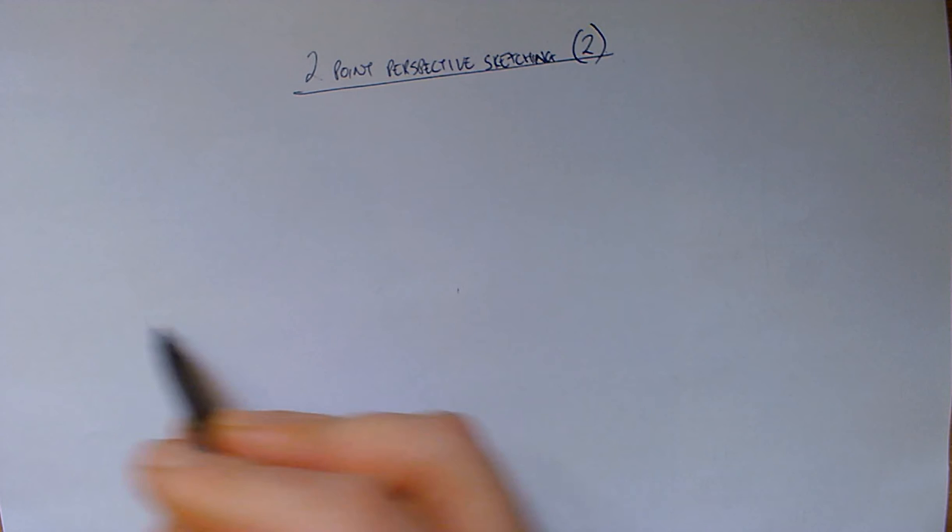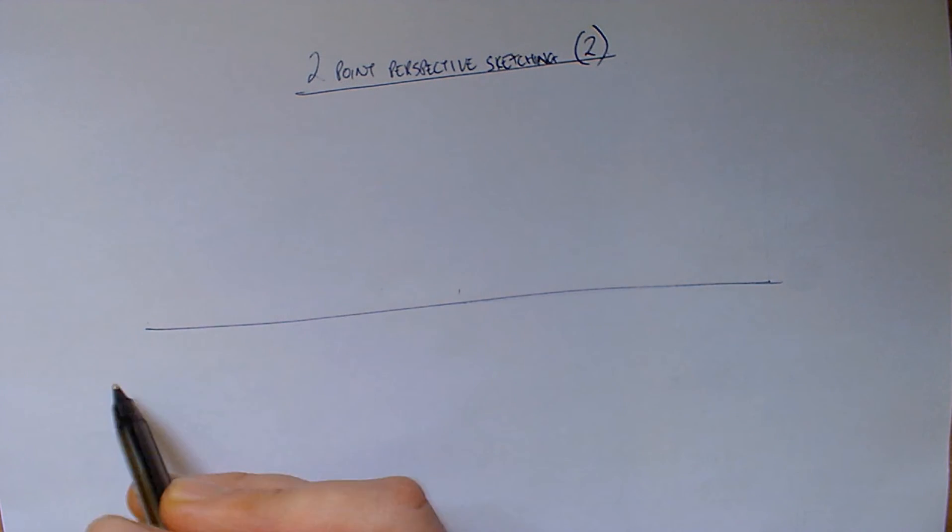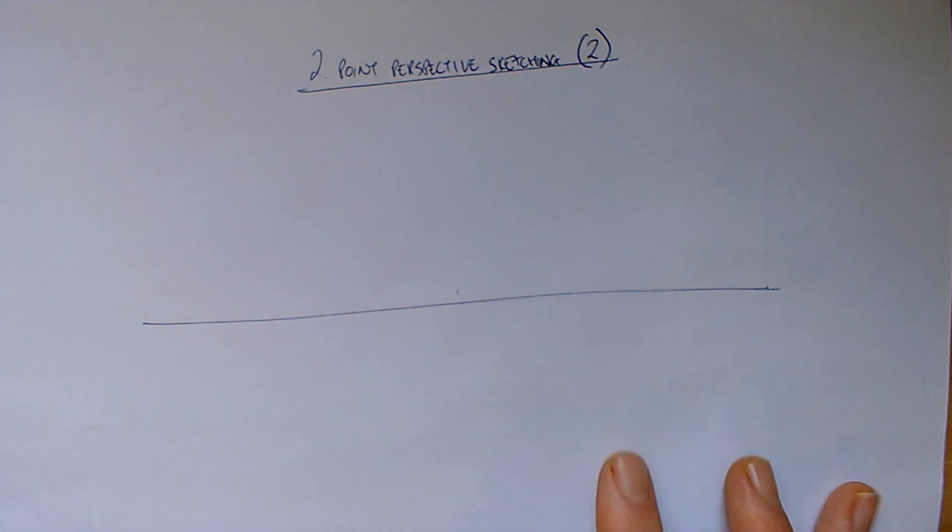If we start off how we start off every two-point perspective sketch while we're still learning, it's with the horizon line. So we'll put that nice and straight, or as straight as we can sketch, across the centre of the page. If you do your ghost lines first, it'll help you get that line as straight as possible.